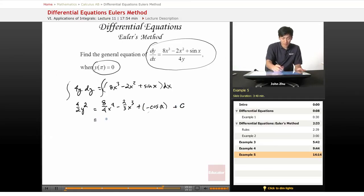So let's rewrite this a little bit: 2x to the 4th minus 2 thirds x cubed minus cosine of x plus c equals 2y squared. So then we have to look at the initial condition to find our c value.